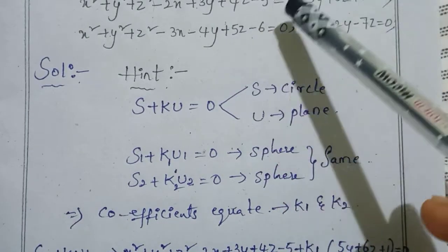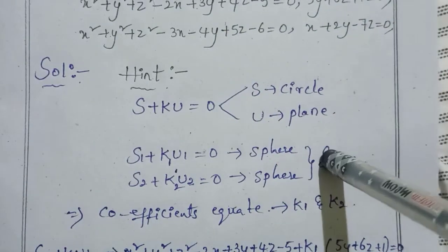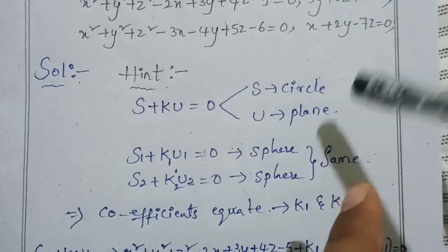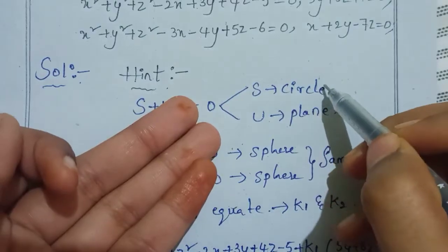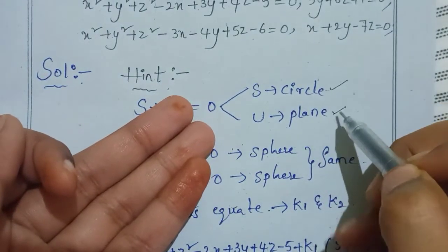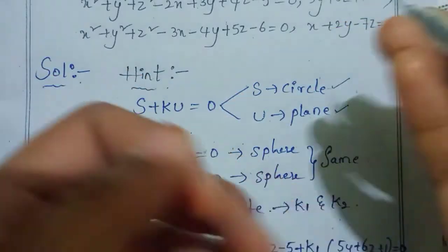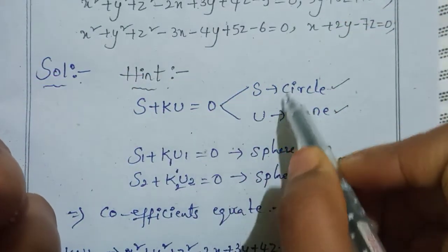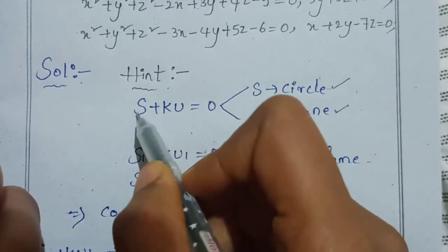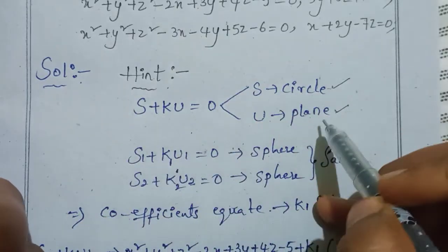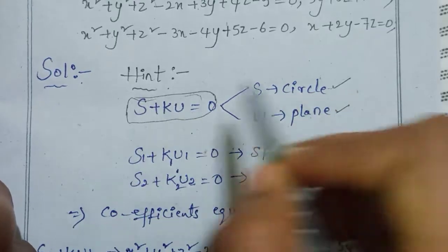If you have a question about two circle equations, I will explain the concept. A circle S and a plane U, the equation of a sphere can be found. Circle on a plane, the equation of sphere is represented as S plus KU is equal to 0.